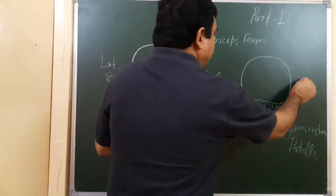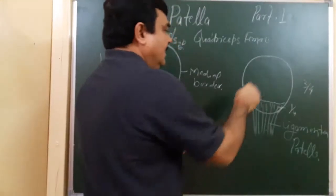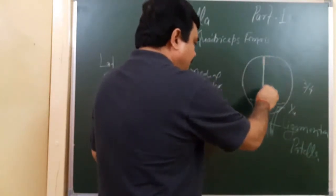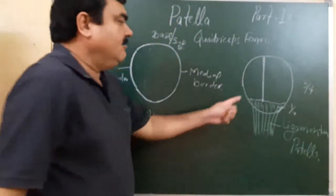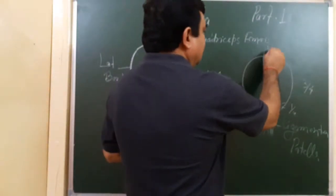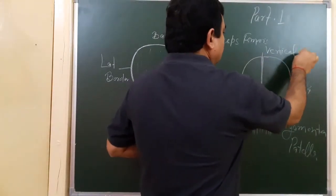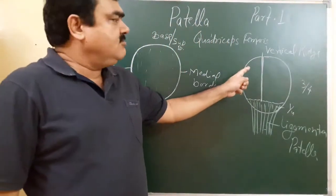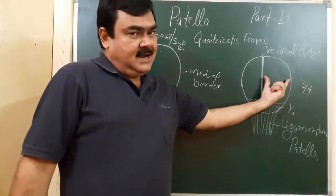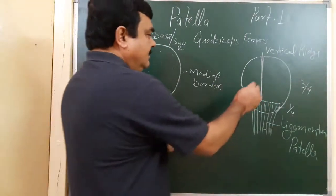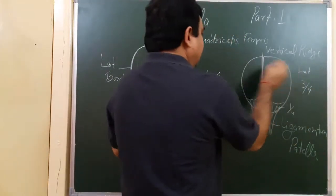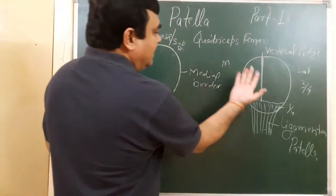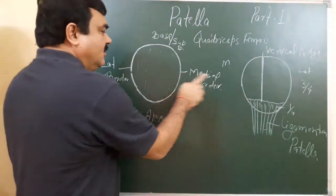The remaining upper three-fourths of the posterior surface is divided into two portions — a lateral portion and a medial portion — by a vertical ridge. This is the vertical ridge. This is the lateral portion and this is the medial portion.